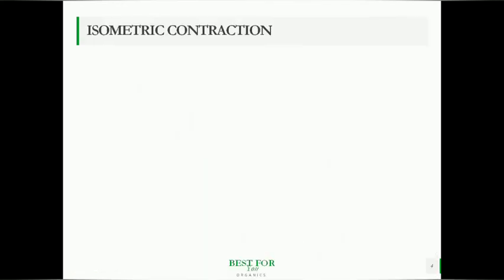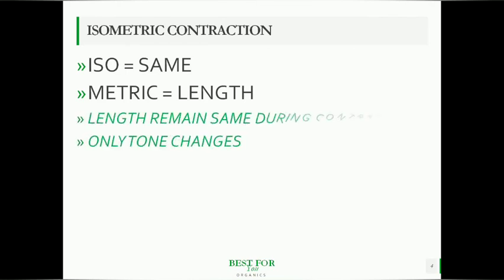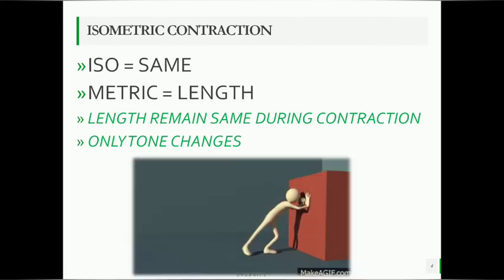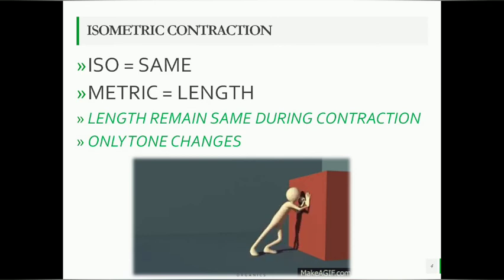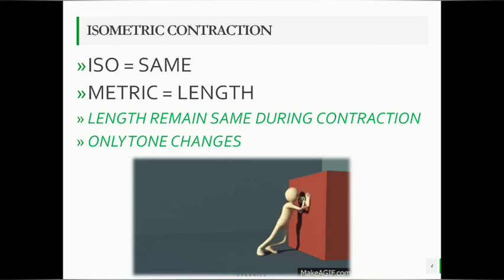The next is isometric contraction. The word 'iso' stands for 'the same' and 'metric' means 'length.' So isometric contraction means the length of the muscle remains the same during contraction — only the tone of the muscle changes. For example, when we push a heavy object, our muscle length stays as it is, but we use the power of muscle tone to push that object.